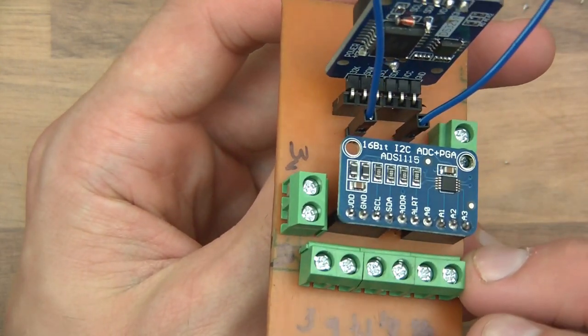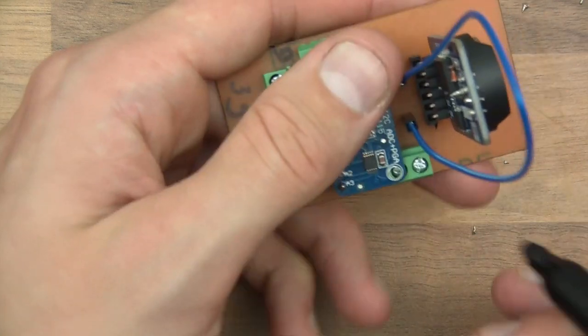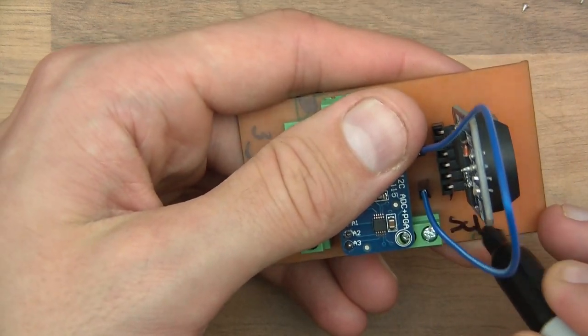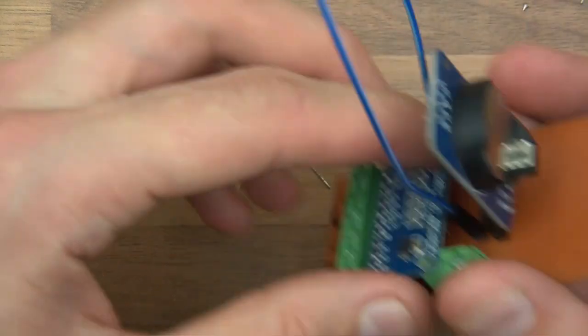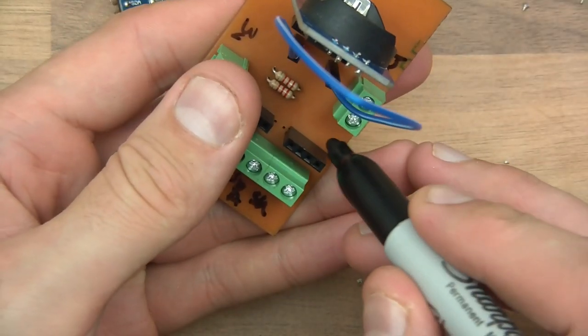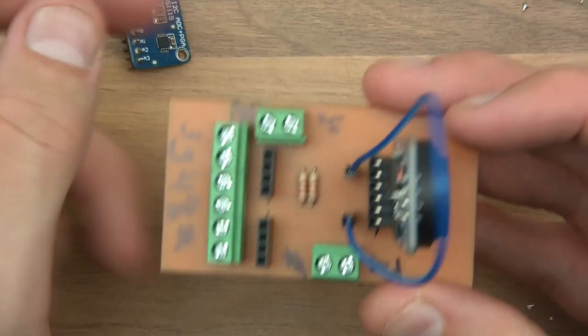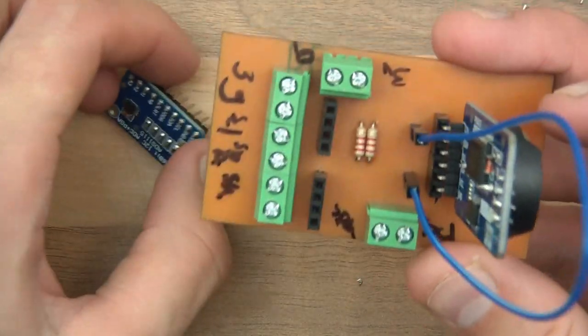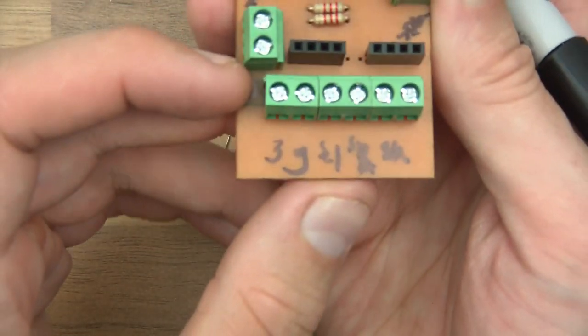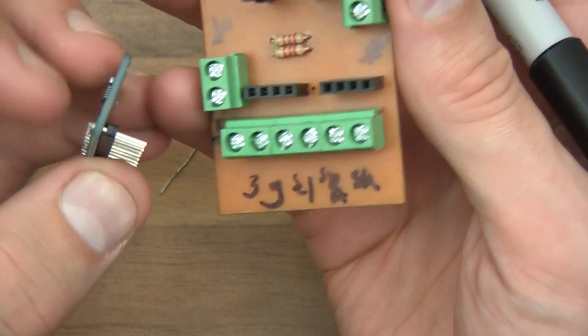I've got these two over here. They are SCL this side and SDA this side. Could do with a finer marker really. Look at this, it looks like Egyptian or something. Anyway, it's done.